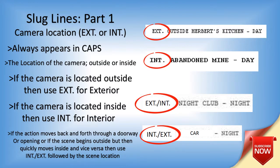So let's get into the specifics of a slug line — part one — which has to do with camera location, either exterior or interior. Always in caps, it's the location of the camera outside or inside. So for example, if the camera is located outside, you use the abbreviation EXT. for exterior. If the camera is located inside, you use the abbreviation INT. for interior.